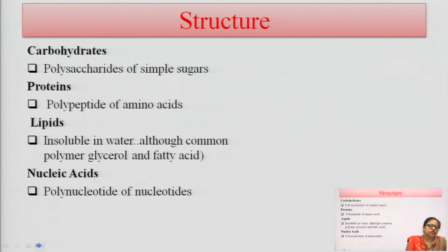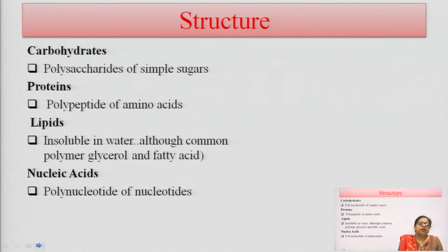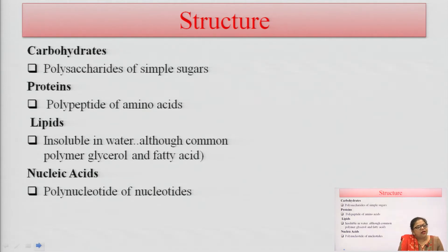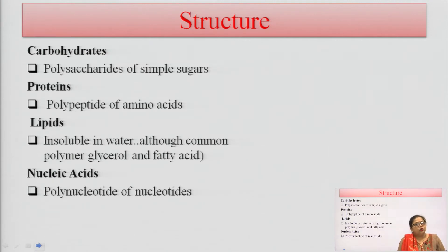What are the structures of these biomolecules? Carbohydrate is basically polysaccharides of simple sugars — simple sugars like glucose and fructose. These monosaccharides react together to form disaccharide, oligosaccharide, and polysaccharide. Polysaccharide is the complex structure of carbohydrate. Protein is a polypeptide of amino acids — amino acids are joined together by peptide bonds to form protein.